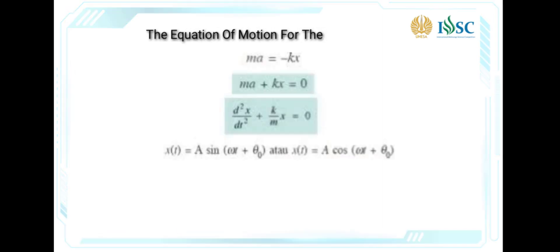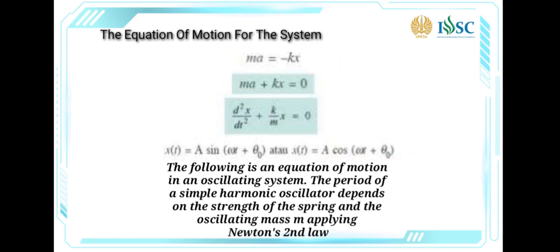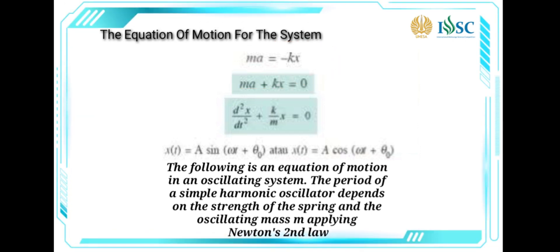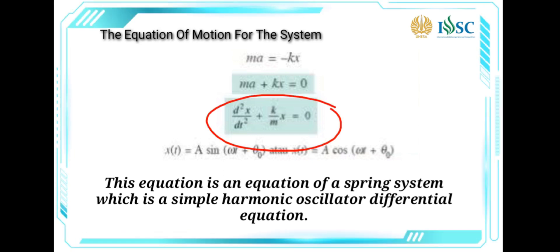How many degrees of freedom are there in the system? Degree of freedom is an indication of the number of physical quantities or variables used to express the complete state of motion. In this practicum, because it only uses a spring and a mesh, the system runs the equation of deviation against time, which means this system has one degree of freedom. The period of a simple harmonic oscillator depends on the spring constant and the oscillating mass M, applying Newton's second law. This equation is a simple harmonic oscillator differential equation.